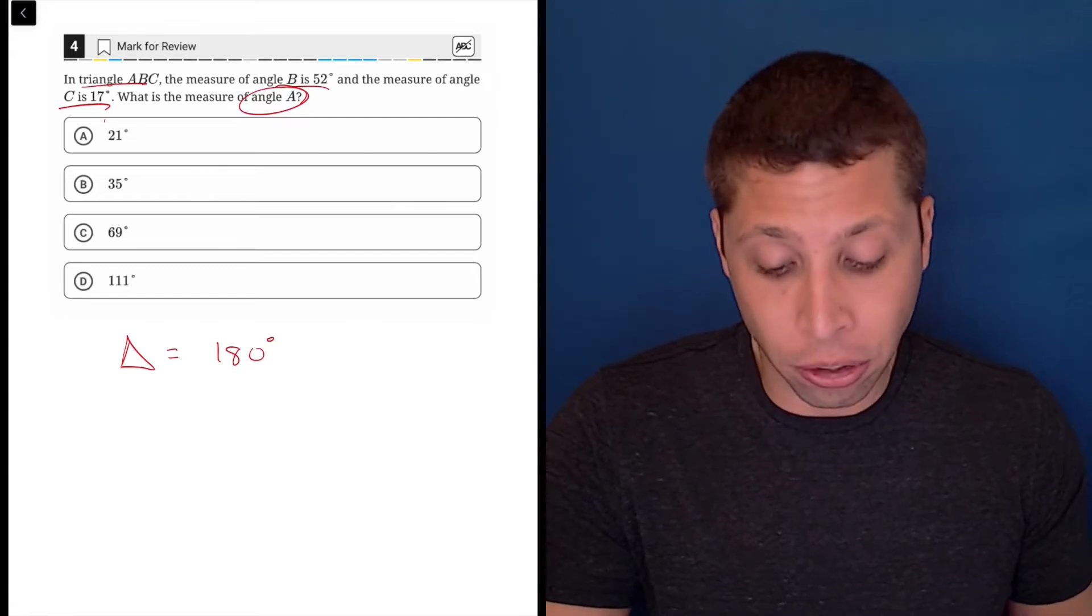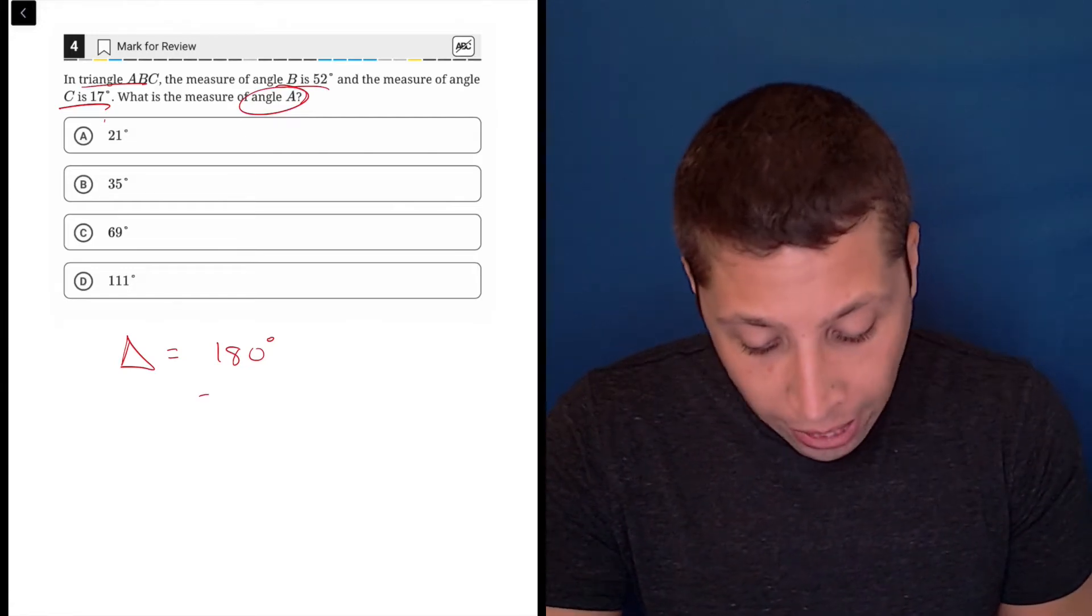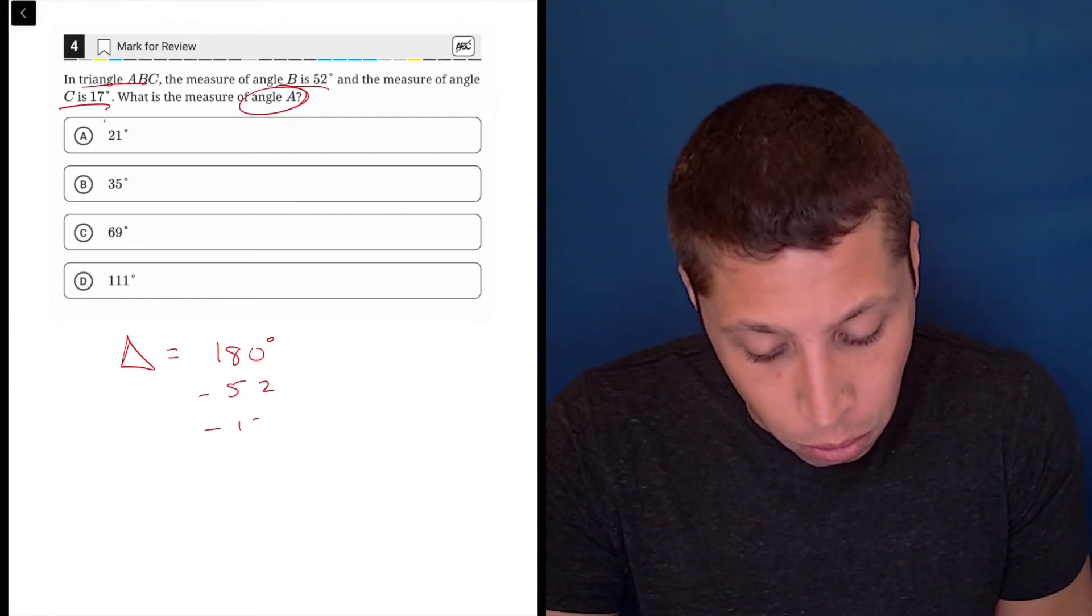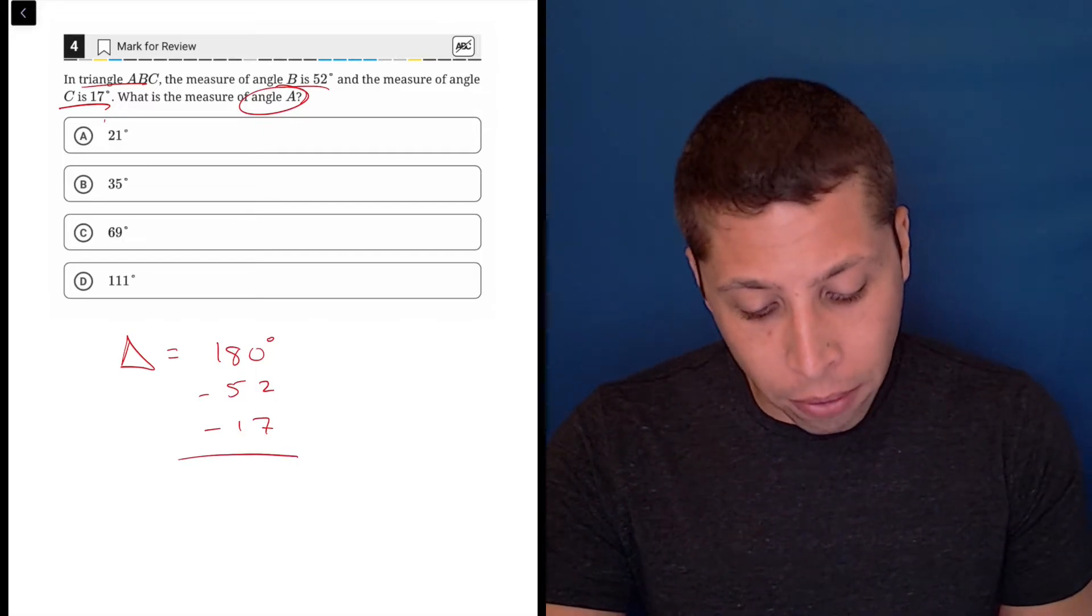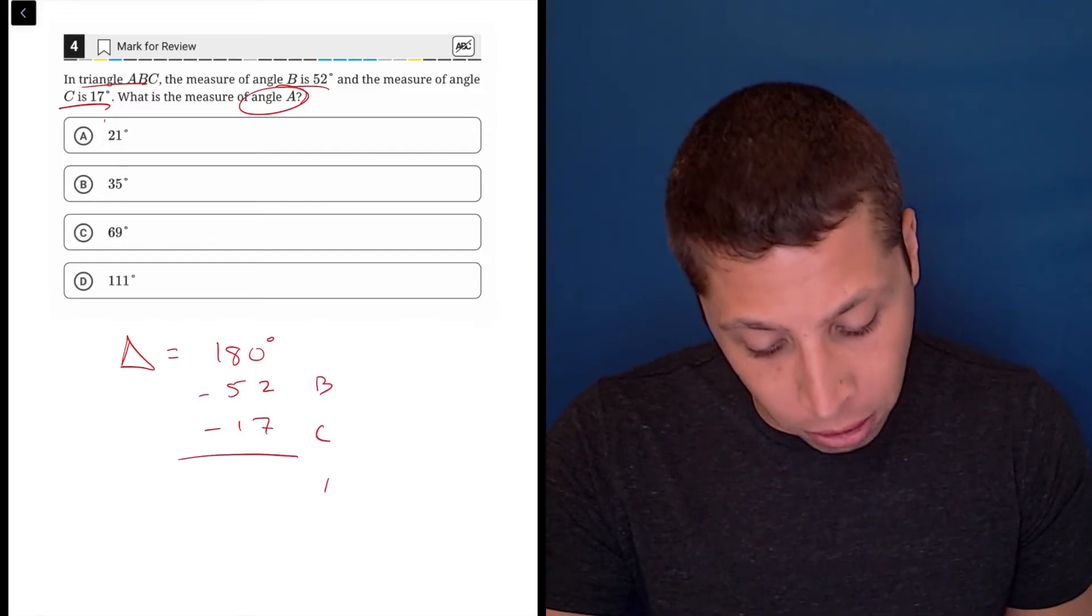Now, I don't even need to draw the picture because of just how simple this is. I can just subtract out the 52 and the 17, and whatever I'm left with is going to be the measure of angle A.